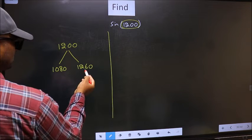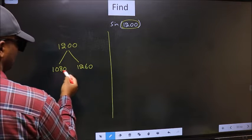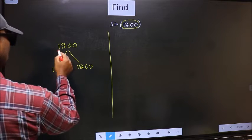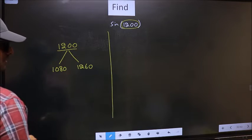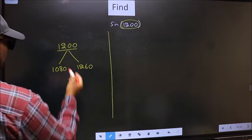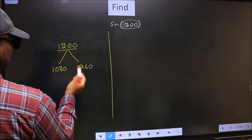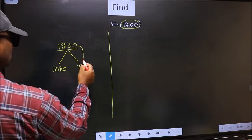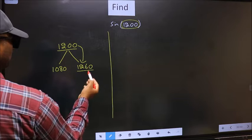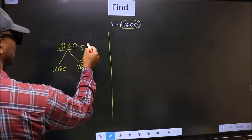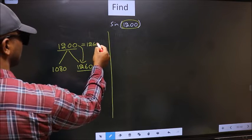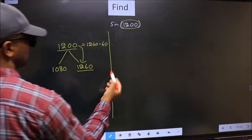This is 180×6 and this is 180×7. Between these two numbers, 1200° lies. Next, now this number is close to which number? This is close to 1260°. So 1200° now should be written as 1260°-60°.